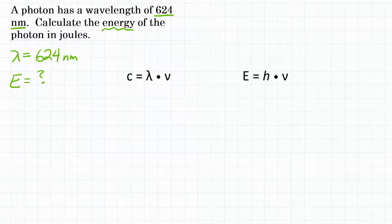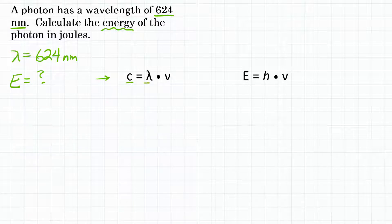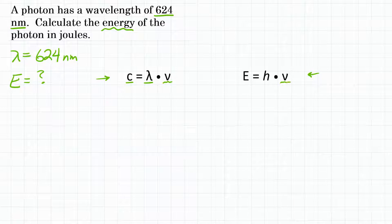To solve this problem, we're going to need to use two equations. The first one is where c, the speed of light, is equal to wavelength times frequency. We'll use the speed of light and wavelength to solve for frequency. Then we'll use the equation where E energy equals Planck's constant times frequency, multiplying by Planck's constant to get energy.